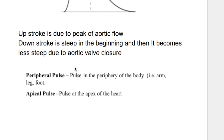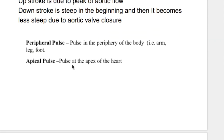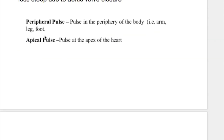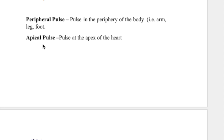What are the different types of pulses? A peripheral pulse or an apical pulse. Peripheral pulses are in the periphery — arm, foot, and leg. Not all peripheral pulses have identical findings; they may have different findings. An apical pulse is the apex beat of the heart.